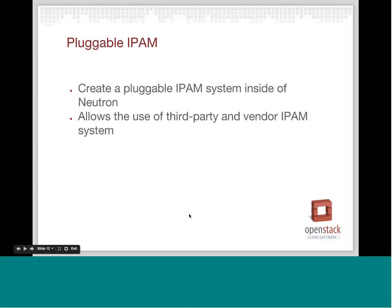Pluggable IPAM. Those of you who attended my Kilo webinar will know that this was an item for Kilo, and we didn't get this merged near the end of Kilo for a variety of reasons. The good news is we've already started merging the patches for this in Liberty, and this will be available for Liberty. This has been a really requested feature by operators who are already utilizing an existing IP address management system and would like to integrate it with their OpenStack cloud with Neutron. That's exactly what this will allow you to do, and it will be a nice feature for operators.